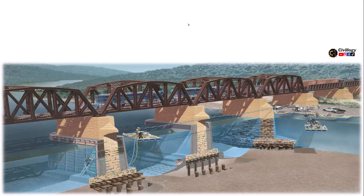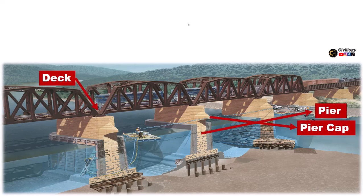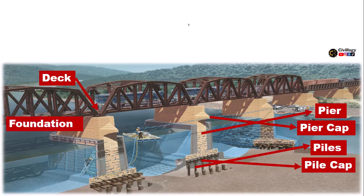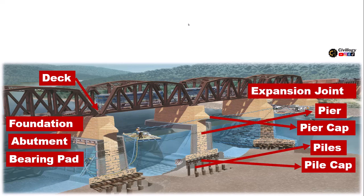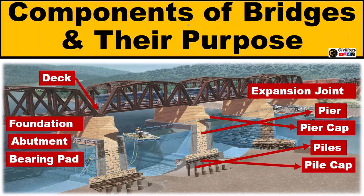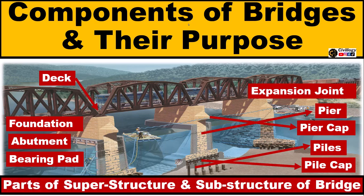In this video, we will discuss some of the key components of the bridge which includes the deck, pier and pier cap, piles and pile cap, foundations, abutments, bearing pad and expansion joint. We will discuss the components and their purposes, and also which component lies in the superstructure and which component lies in the substructure of the bridge.